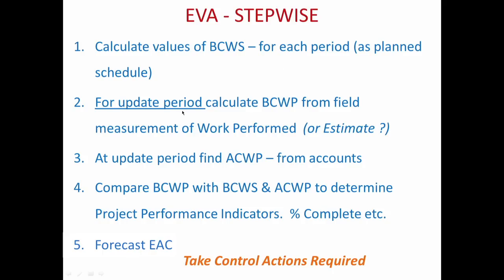Then for each update period, calculate BCWP by taking field measurement of work performed and multiplying by the unit rate — the ideal way. Where that cannot be done, it may be through an estimate of percentage complete. Ultimately, percentage complete can be estimated or obtained by measuring actual work performed divided by total work at the activity level.